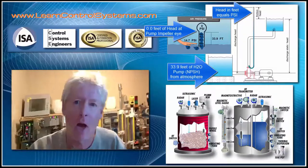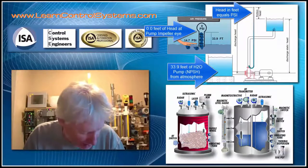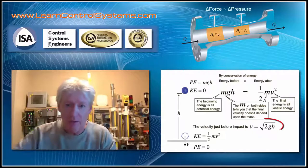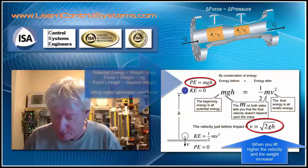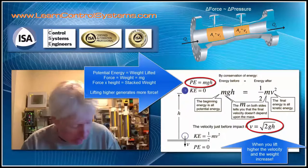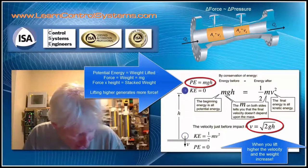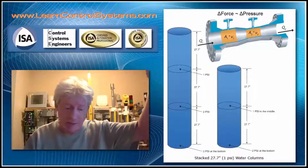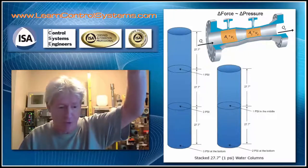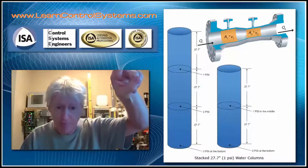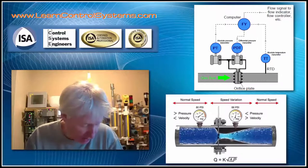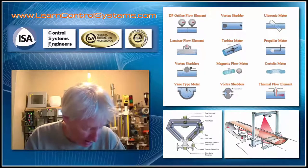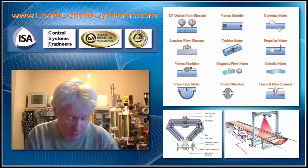Level measurement is based on head, work, and force — specifically how high a mass is relative to the earth. We raise something up to a level: it has potential energy, it falls down, the higher it is the faster it goes, and mass times acceleration equals force. This is how pumps work and how we measure levels in tanks. For flow measurement, we use the differential of height to give us a difference of force proportional to fall height. Velocity squared equals 2g times height. For mass flow, we can use gamma radiation to measure process density.